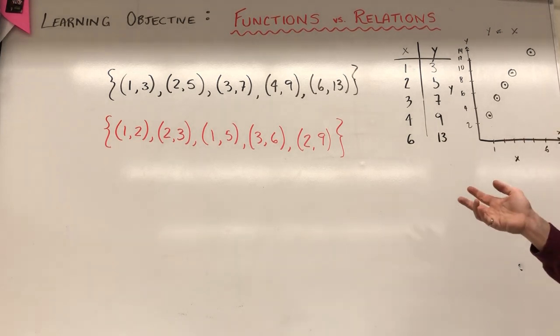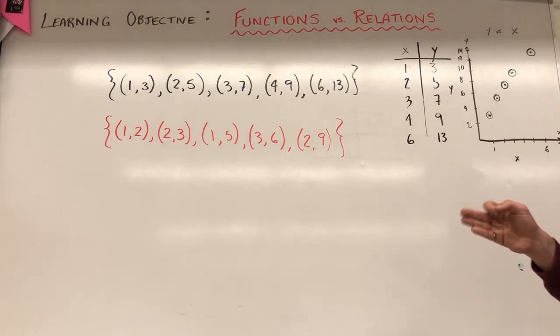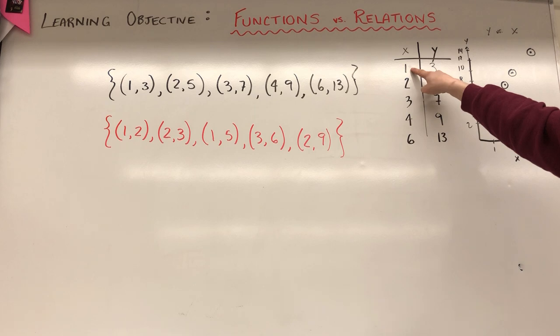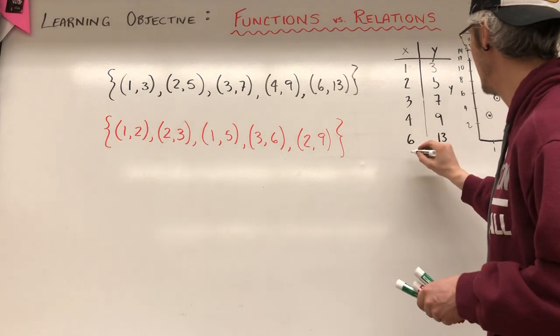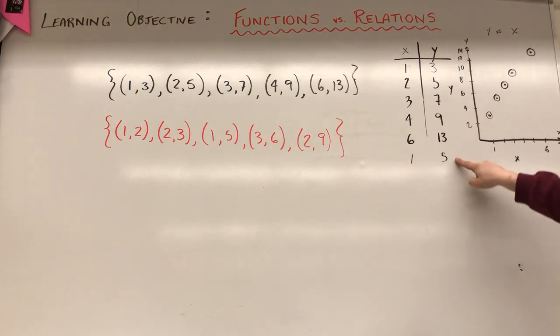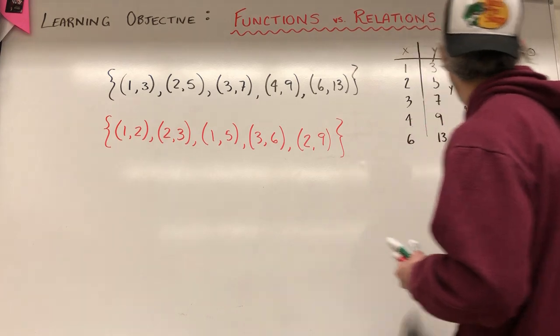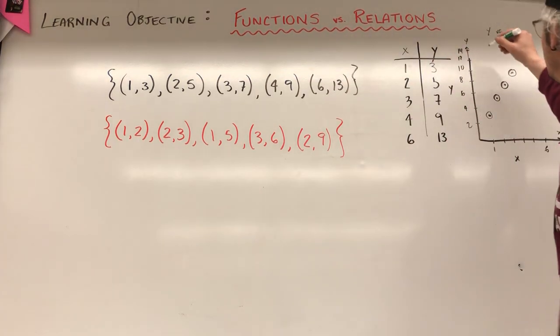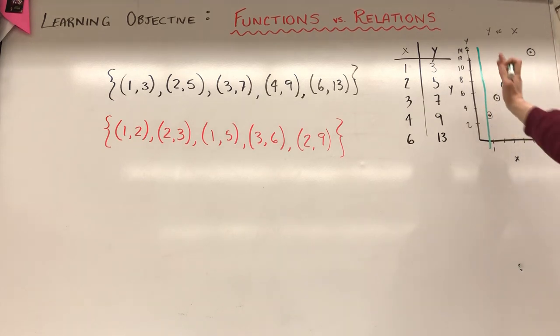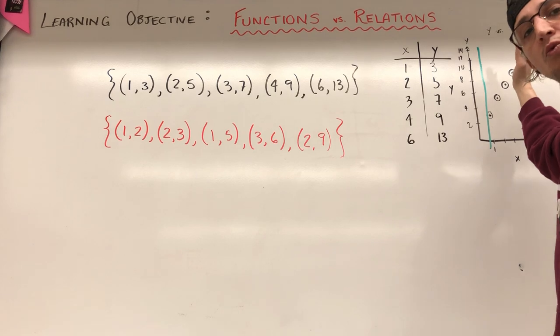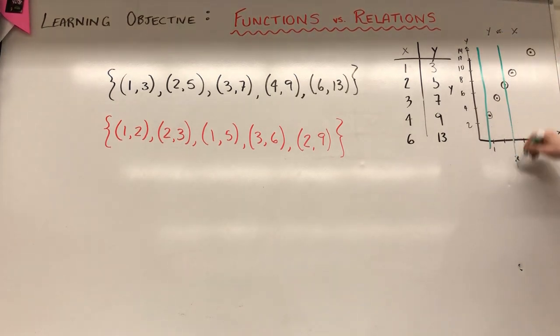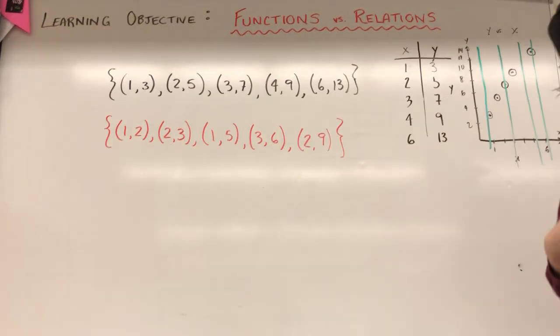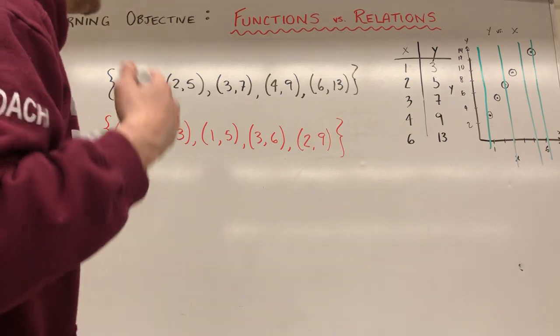Now, we know that a function has only one specific output for a specific input. That is to say, if I had 1, I'm only going to have one when X is 1, Y is 3. I'm not going to have another X is 1. I'm not going to have another data point where X is 1 and Y is 5, for example. Because now I have two different outputs for the same input 1. And I can check on a graph, whether it's a function or a relation by using the vertical line test.